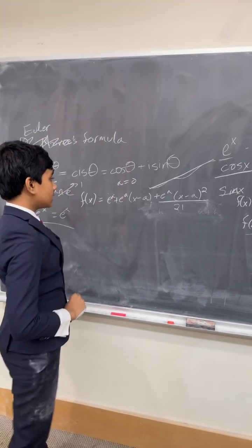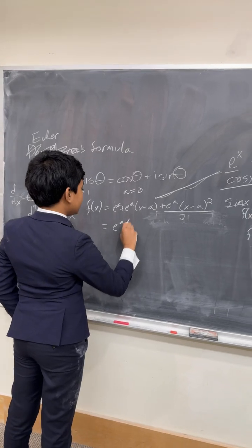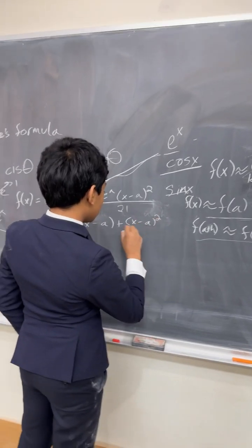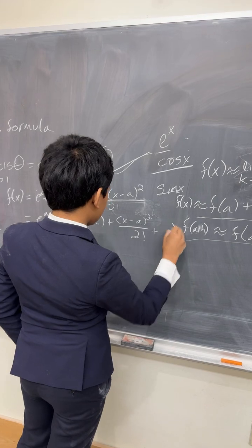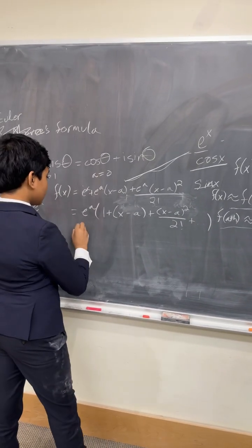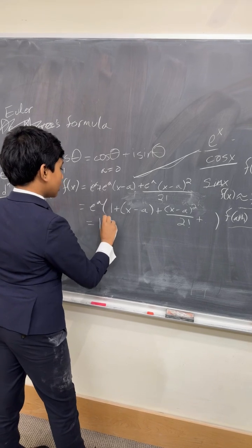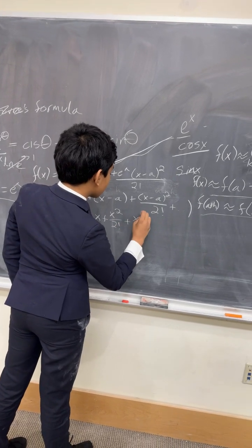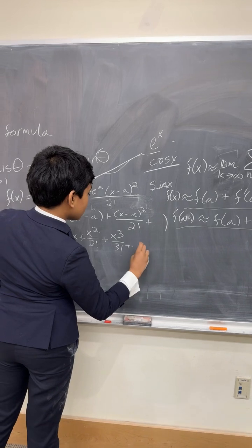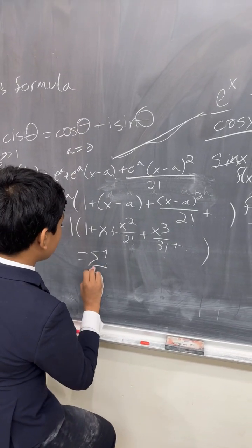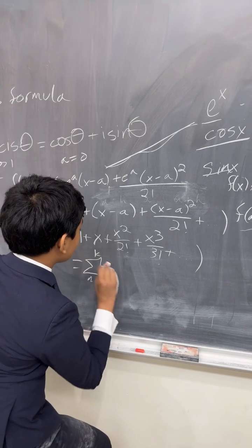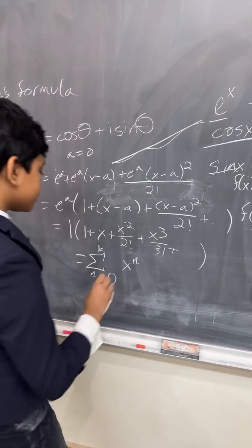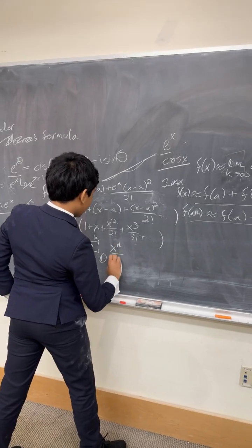So, with the Maclaurin series, a equals 0. Let's factor out all the e to the a's for a second. We get 1 plus x minus a, plus x minus a squared over 2 factorial, and so on. Then when you set a to 0, the outside becomes 1, and the inside becomes 1 plus x plus x squared over 2 factorial plus x cubed over 3 factorial, and so on. So, we get a very simple expansion: the sum for n equals 0 to k of x to the n divided by n factorial. So, that's e to the x.